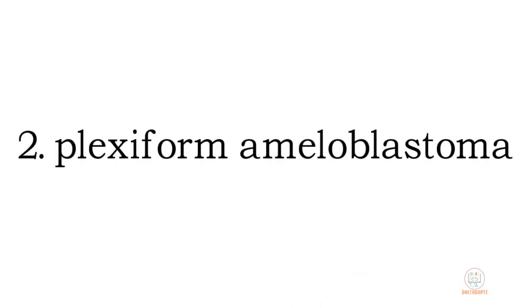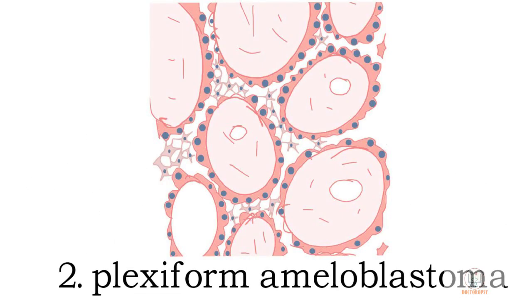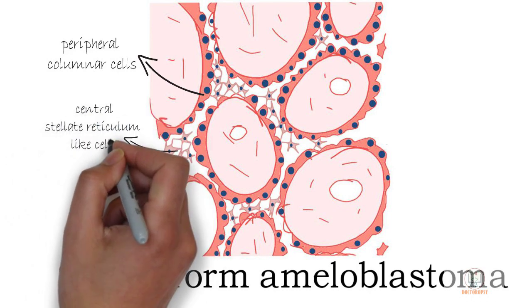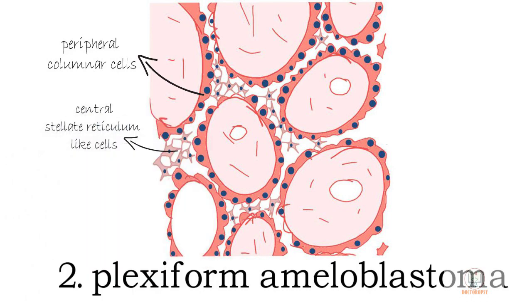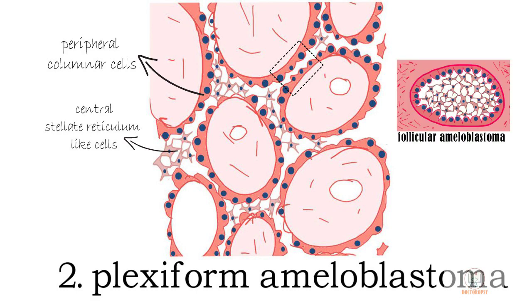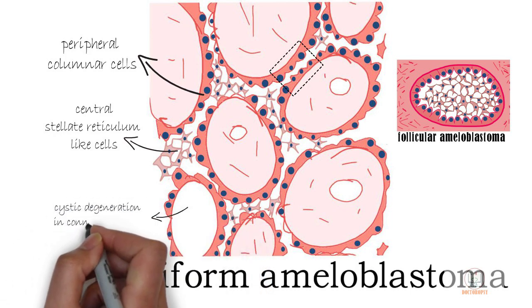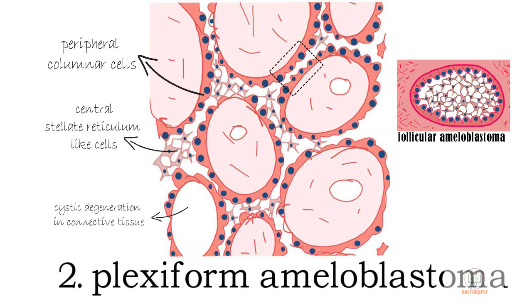The second histological type of ameloblastoma is the plexiform ameloblastoma, where the tumor cells are arranged in a network of interconnecting strands. Each strand has a peripheral layer of columnar cells and stellate reticulum-like cells in the center. Sometimes double rows of peripheral cells are lined up back to back. The central cells are much less prominent than in the follicular type, and cystic degeneration may be seen in the connective tissue rather than in the stellate reticulum.